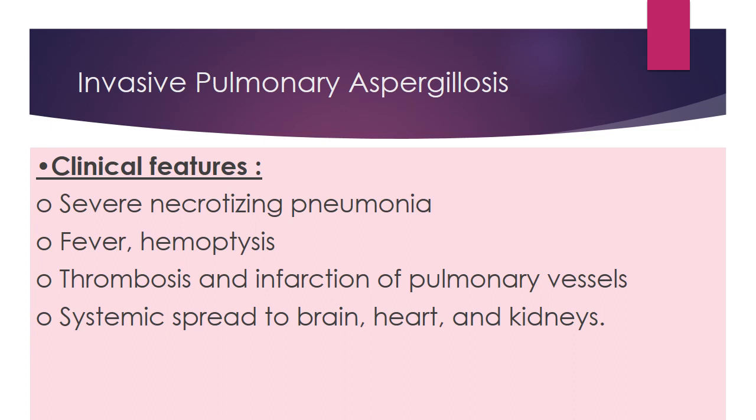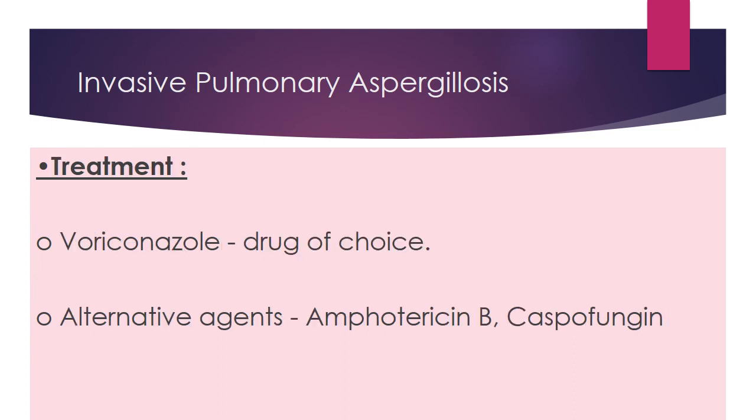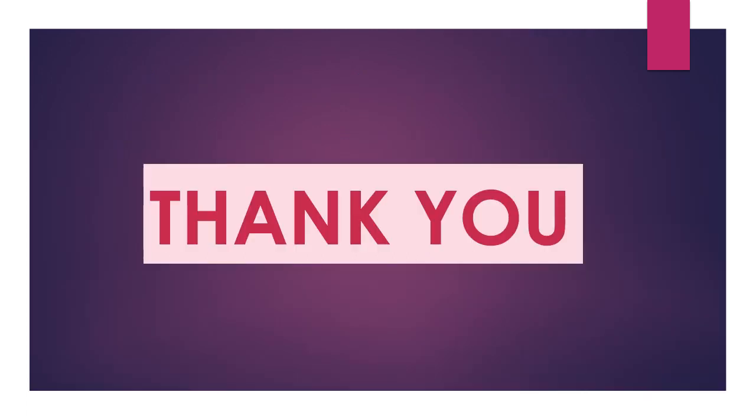It will present with severe necrotizing pneumonia, fever, and haemoptysis. Thrombosis and infarction of pulmonary vessels can occur, and spread to the brain, heart, and kidneys is common. The treatment of choice is voriconazole. Alternative agents may include amphotericin B and caspofungin.